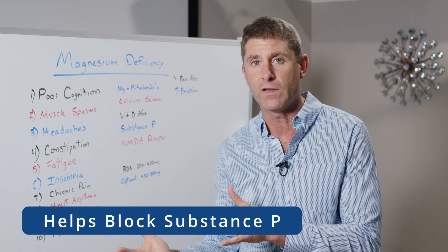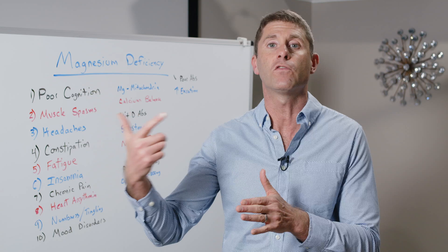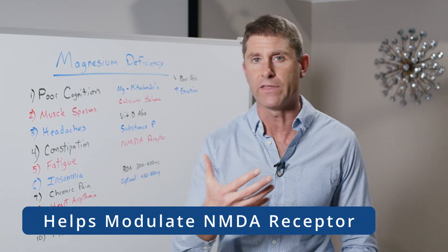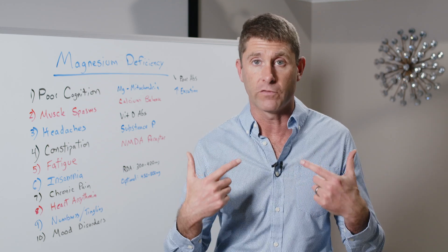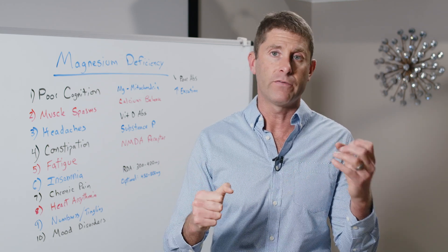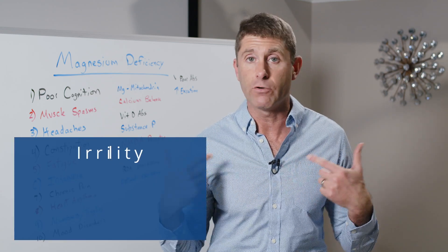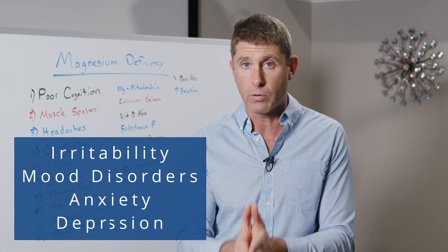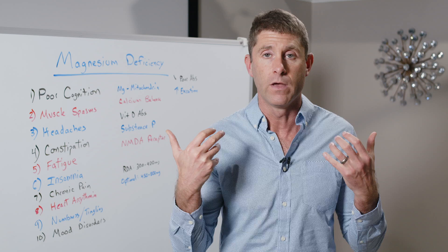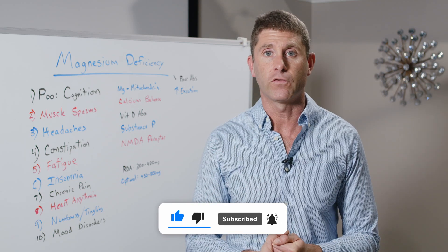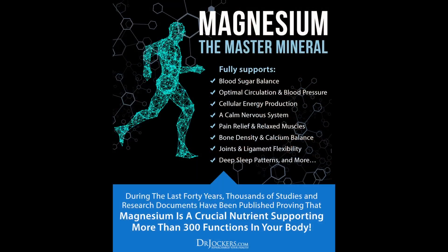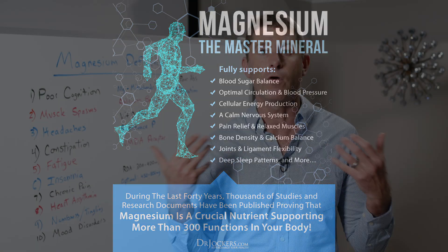Magnesium helps block substance P, which when elevated increases overall pain in the body. It also helps modulate the NMDA receptor, which is associated with glutamate activity in the brain — glutamate is like the gas pedal on all neurons. Too much glutamate and not enough GABA leads to irritability, mood disorders, anxiety, and depression, as neurons overexcite and cause cell damage and brain inflammation. Magnesium acts as a balancer in the brain, keeping neurons firing optimally to improve mood, thinking, and memory.